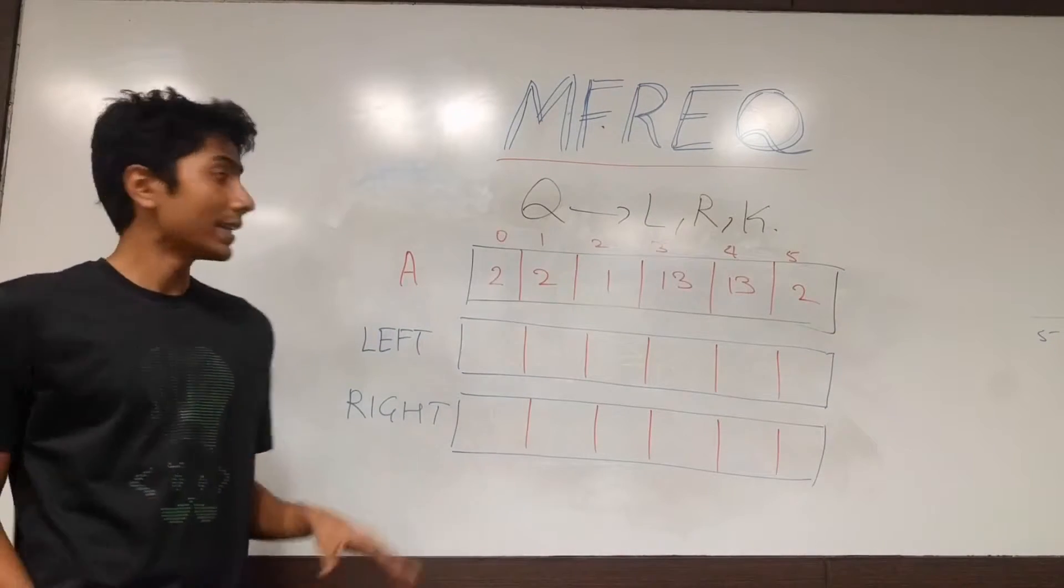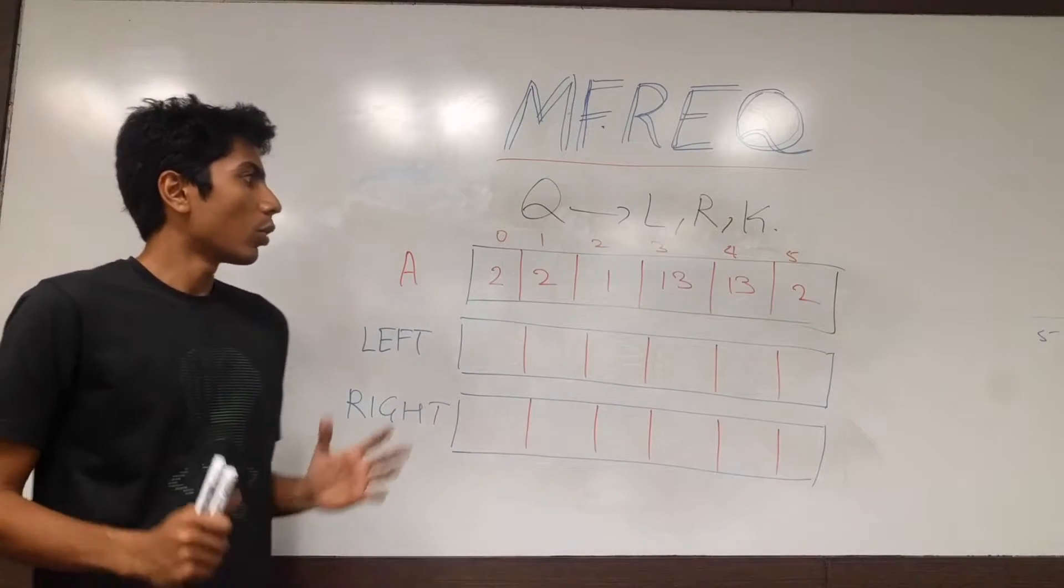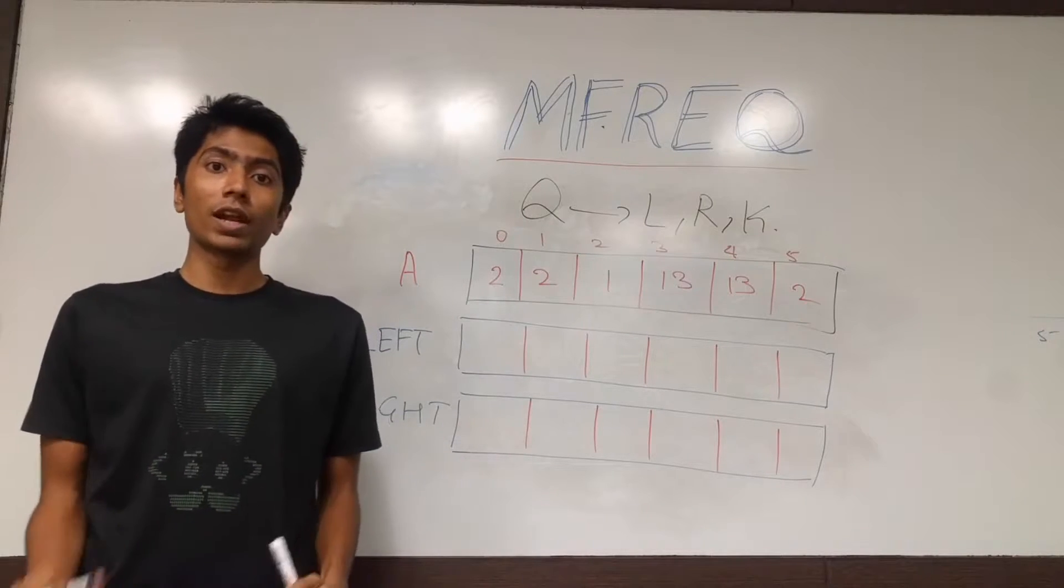So let's assume that this is our original array: 2, 2, 1, 13, 13, and 2. What we are going to define is a concept of runs.